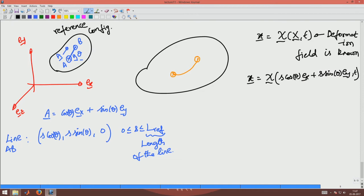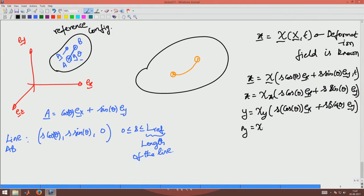So x would be psi of S cos theta E_x plus S sin theta E_y comma t. Now if I were to... I am dropping the t because that is not of importance now. y is psi_y of S cos theta E_x plus S sin theta E_y, and z is psi_z S cos theta E_x plus S sin theta E_y.